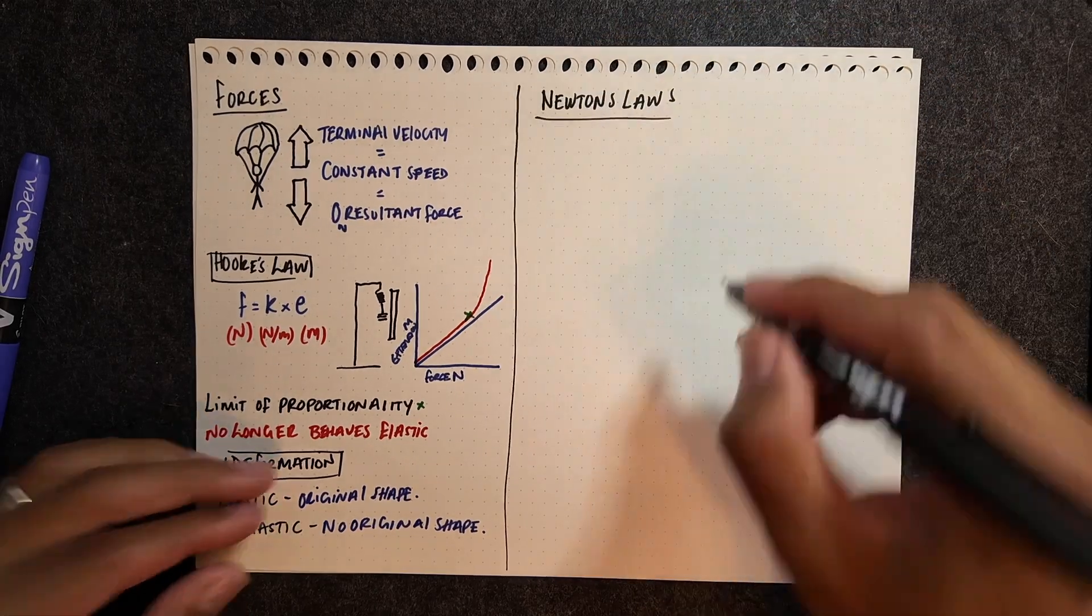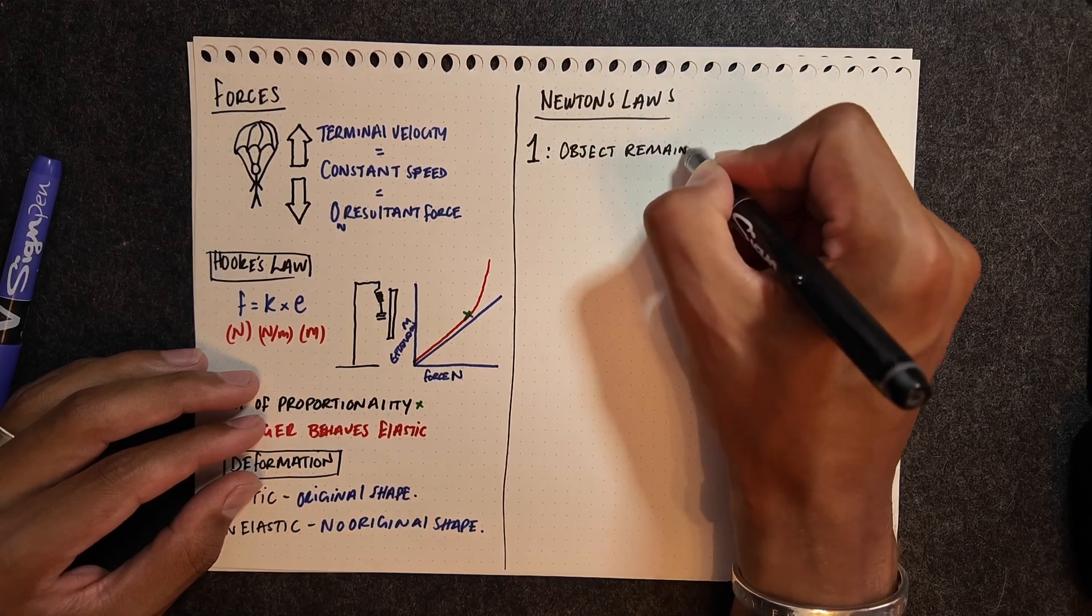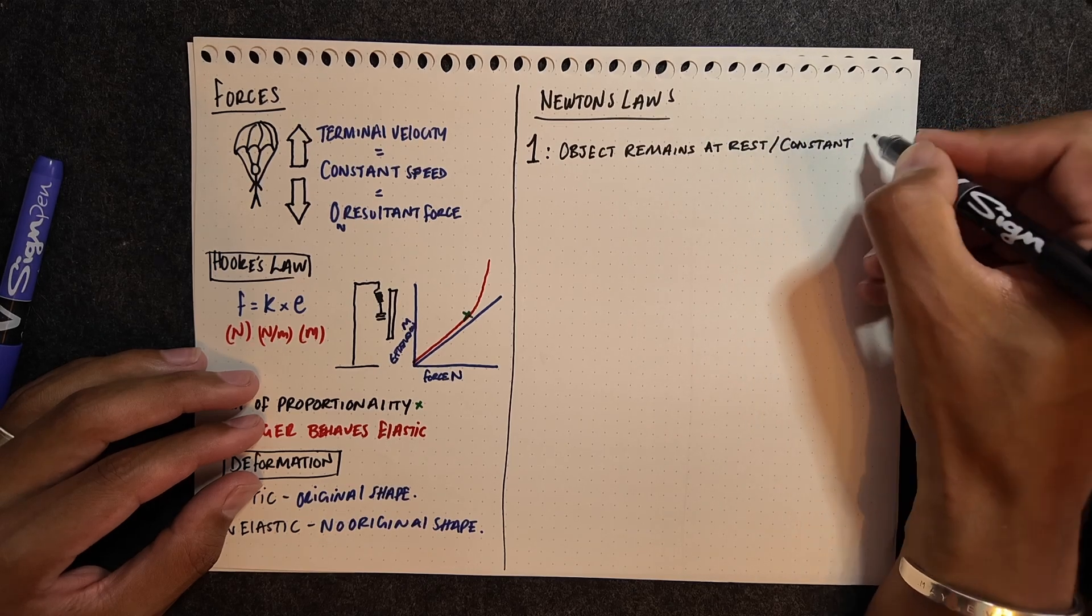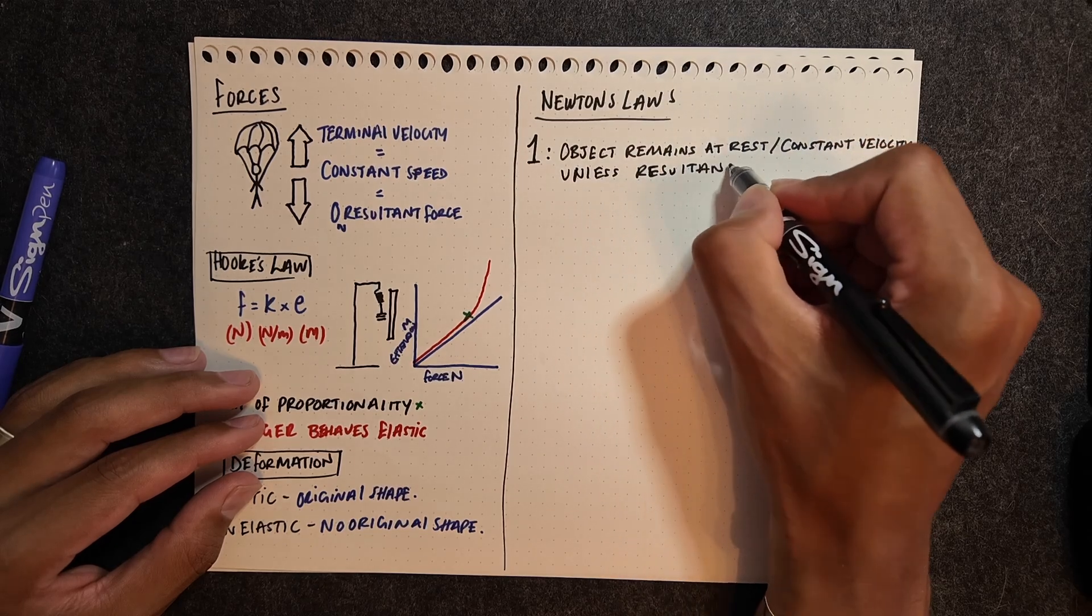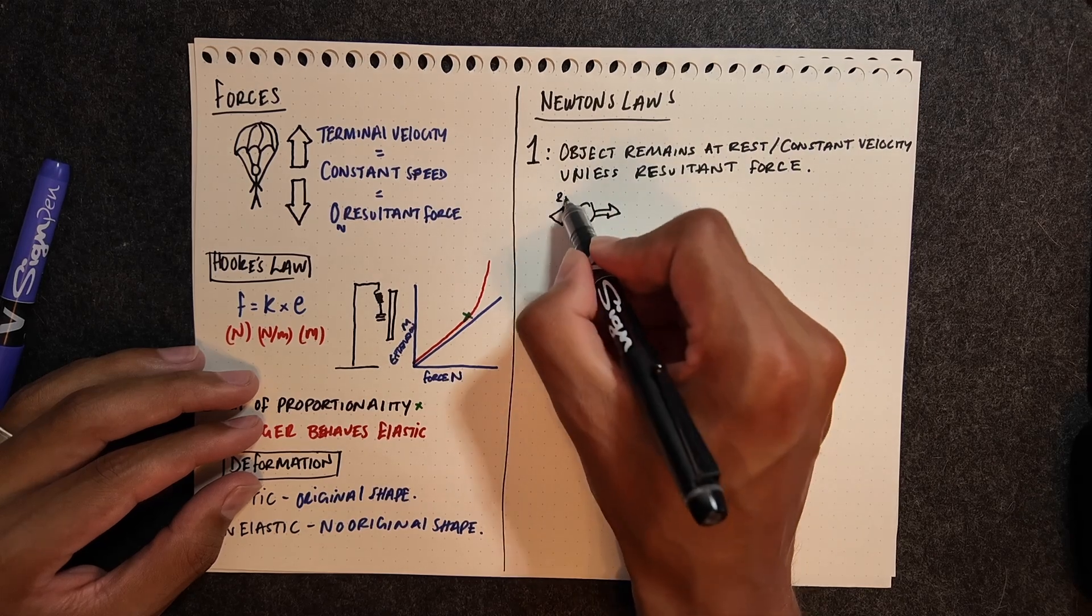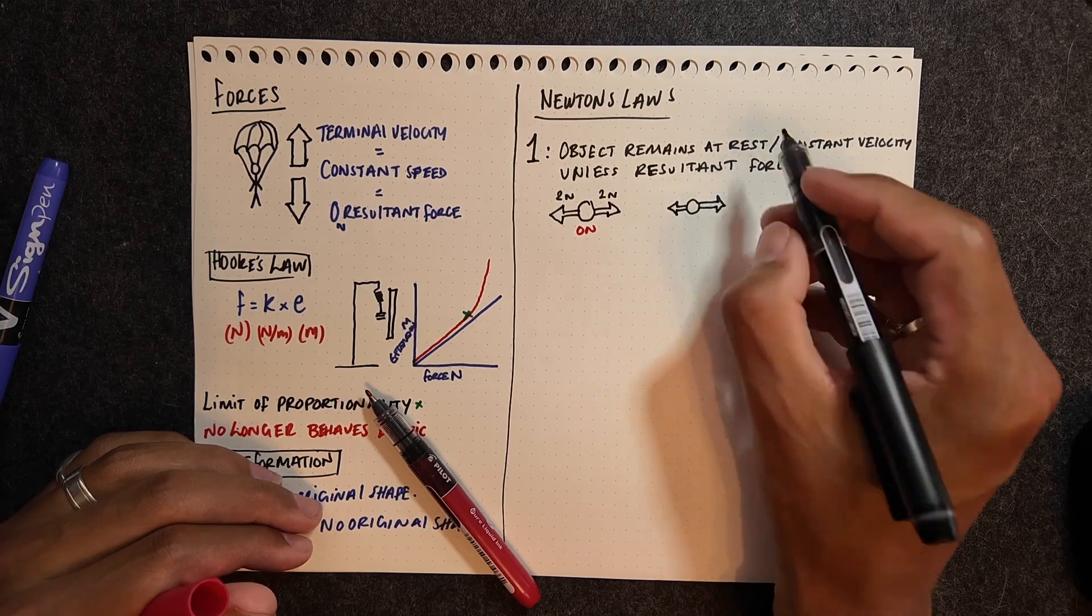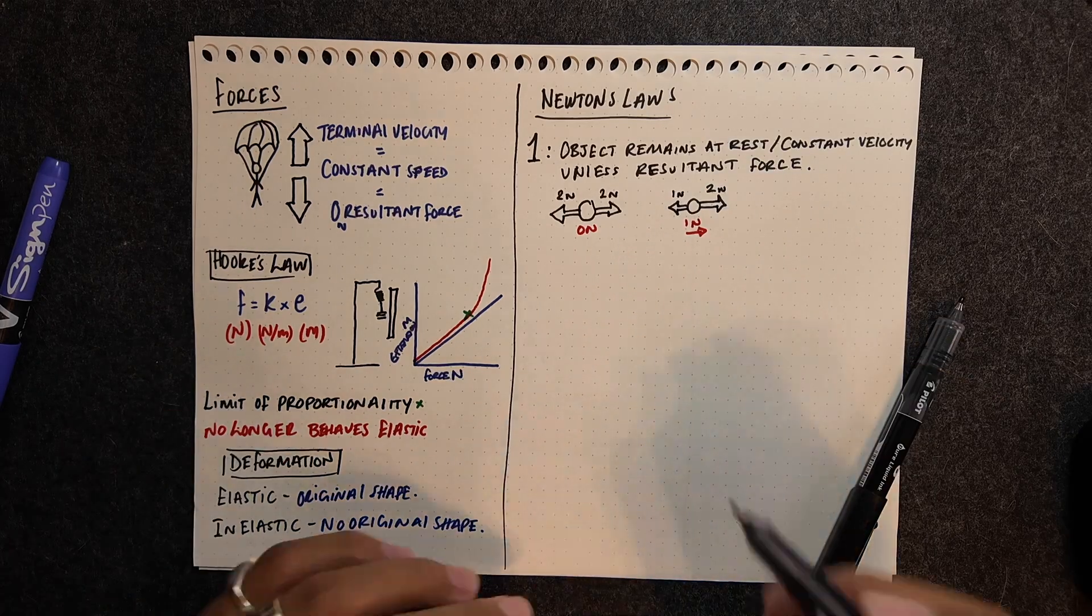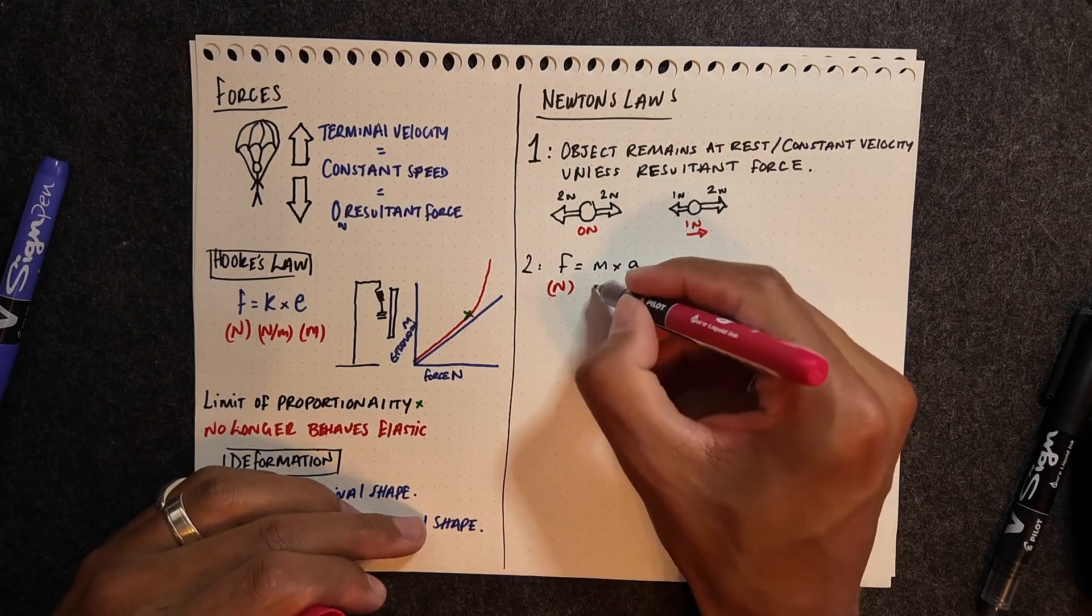Next section, really important section here, is knowing Newton's laws of motion. The first law is the law of inertia. This is where an object will stay at rest or keep moving at a constant speed in a straight line unless a force acts on it. Here we have a ball with balanced forces. It has zero Newtons of force, so that would continue at rest or at a constant velocity. Whereas here we can see that we have a ball with unbalanced forces, and therefore it would accelerate to the right with that resultant force.